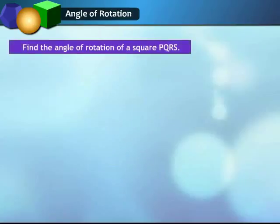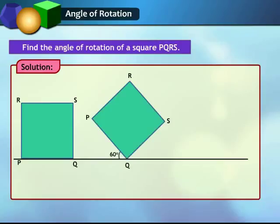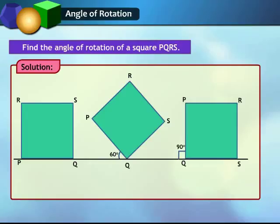Let us discuss an example in which we will find the angle of rotation for a square. PQRS is a square. Let us assume that the center of rotation is Q and rotate the square to 60 degrees — we get a figure which is not the same as the original. Now, we will rotate the square to 90 degrees. After rotation, we get the same figure of the square as we took earlier. So, the angle of rotation of a square is 90 degrees.